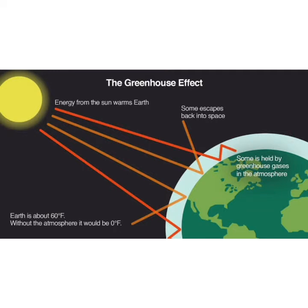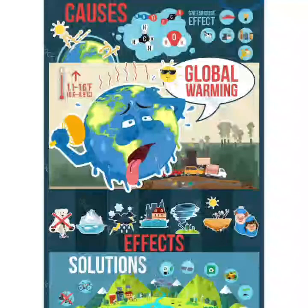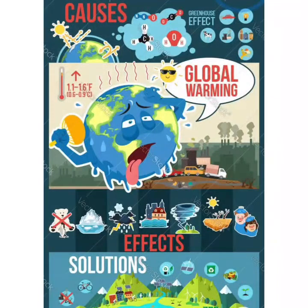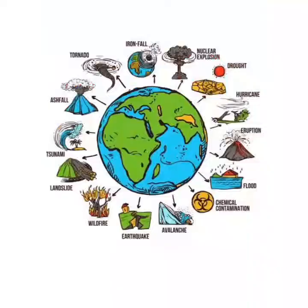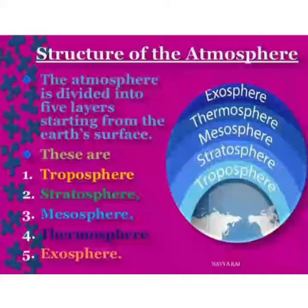This leads to an increase in the temperature of the globe, which is known as global warming. The impact of global warming can be seen as a rise in sea level, which would lead to flooding and eventually to coastal submergence.